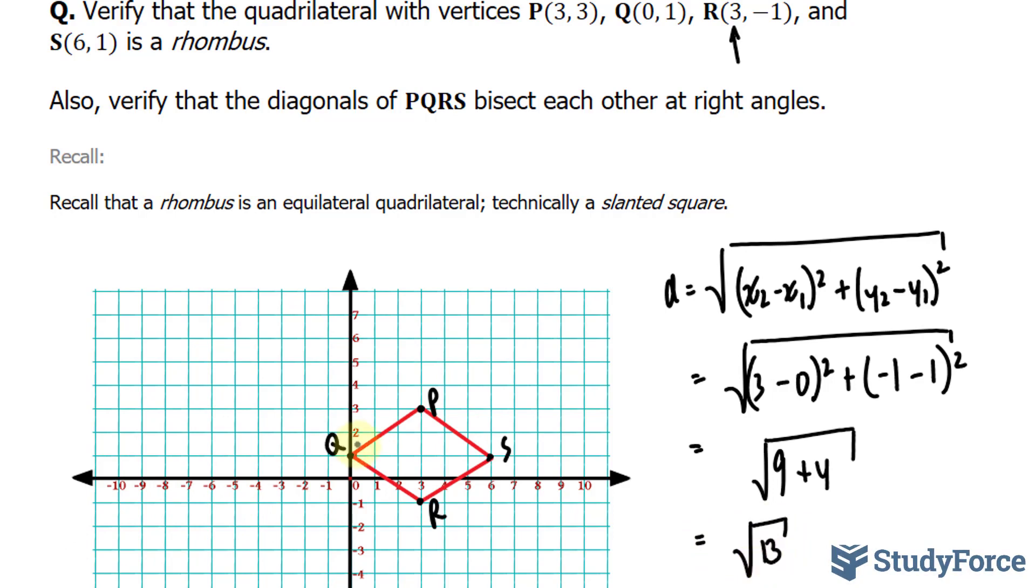Now, if the distance from here to here, here to here, and here to here is the square root of 13, then this is in fact an equilateral quadrilateral, a rhombus. And it turns out that if you do find their distances, they're all going to be the square root of 13. And because of that, I will put these lines through the sides, indicating that they're all equal length.